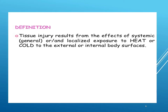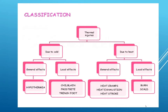Thermal injuries are tissue injuries resulting from the effect of systemic, generalized, or localized exposure to heat or cold on external or internal body surfaces. They are classified into injuries due to cold and due to heat. Cold injuries are divided into general effects — hypothermia — and local effects: chilblain, frostbite, and trench foot, resulting from exposure of extremities to extreme dry or moist cold.